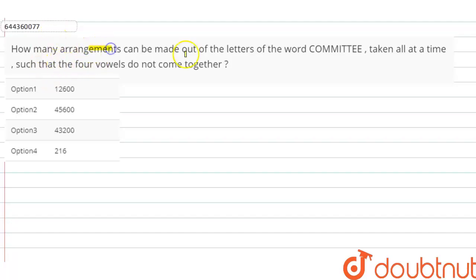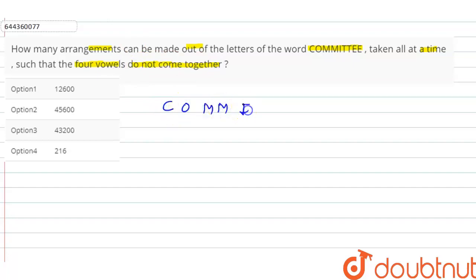The question is: how many arrangements can be made out of the letters of the word COMMITTEE, taken all at a time, such that the four vowels do not come together? First, write the word COMMITTEE: C, O, double M, I, double T, and double E.